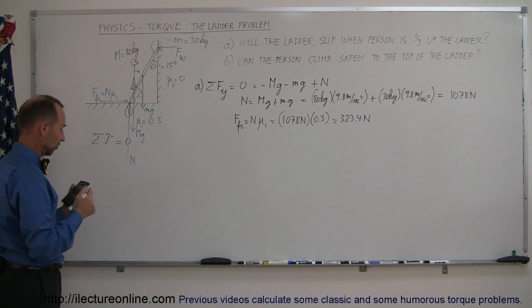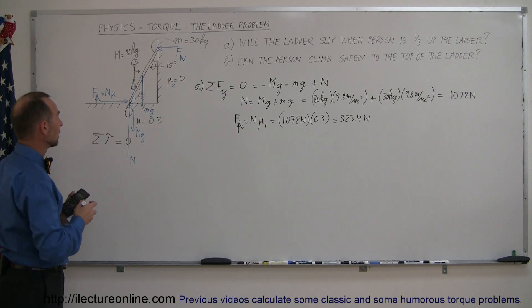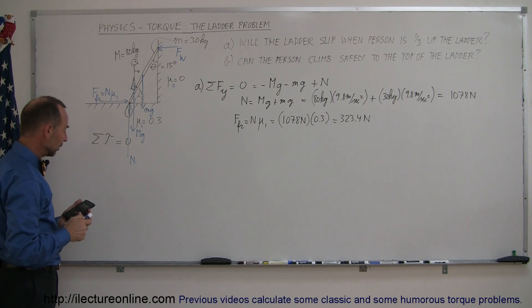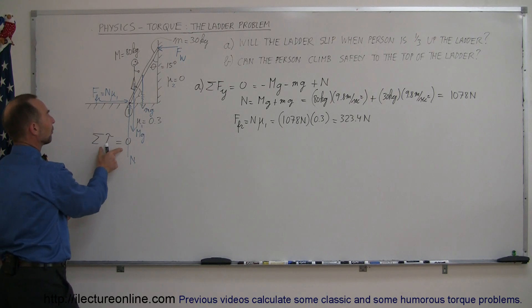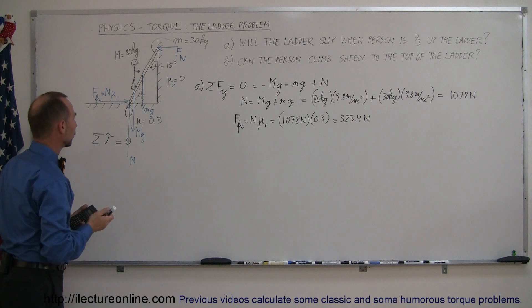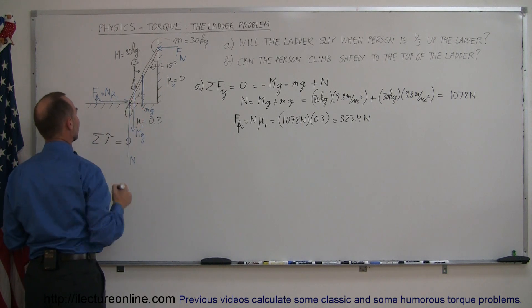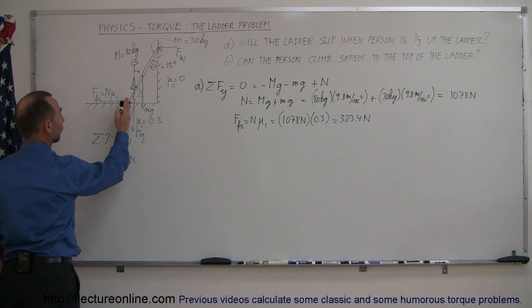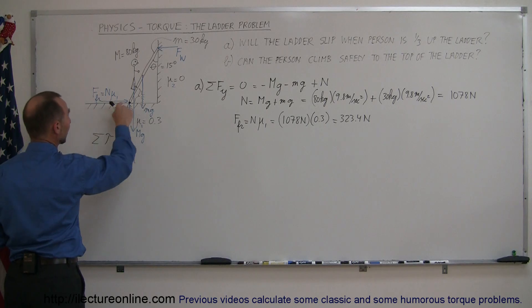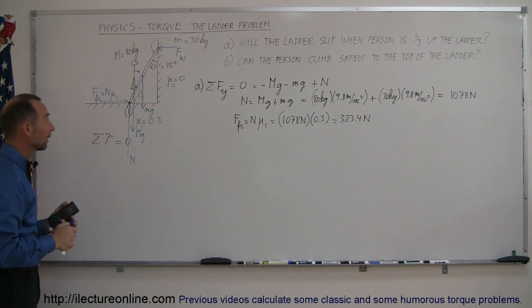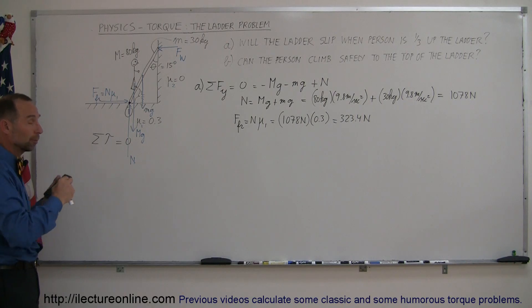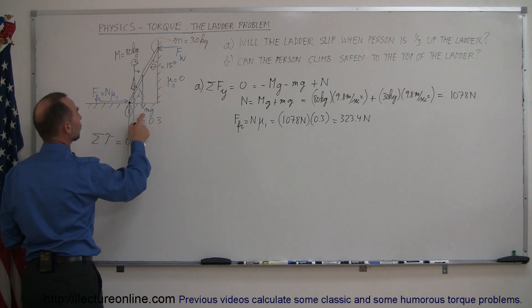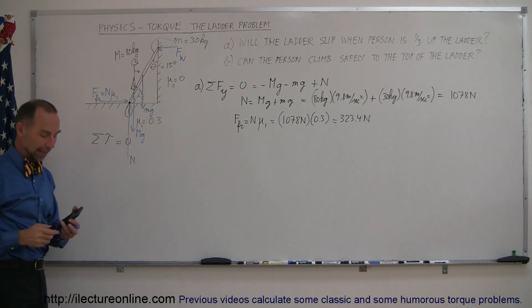So is that enough to keep the ladder from sliding when the person is one-third of the way up? To find out, we use the torque equation. We pick the pivot point at the base of the ladder. If we pick that pivot point, we don't have to worry about the normal force or the friction force, because they both pass right through the pivot point — the distance from the line of action to the pivot point is zero, so they produce no torques.